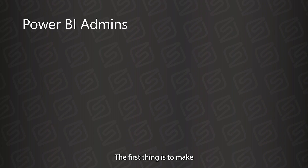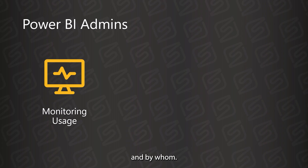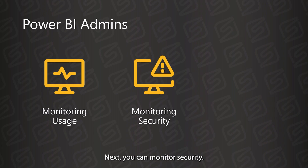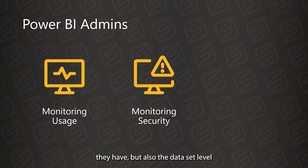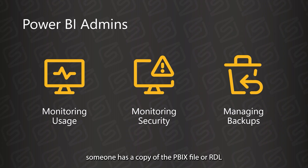As a Power BI admin, the first thing is to make sure Power BI is actually being used and used properly. Power BI Sentinel provides audit log reporting to see what reports are being used and by whom. This allows you to see where adoption efforts may need more support, or identify users who are licensed with Power BI but don't need to be. Next, you can monitor security — both at a user level to see what access and permissions they have, but also at a dataset level to see if row level security is being applied. Next, you can manage backups so that if something happens to your reports, you have a way to restore it instead of hoping someone has a copy of the PBIX file or RDL file available.